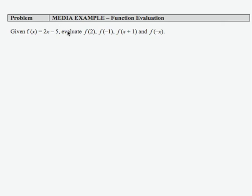Here I'm asked to evaluate a given function f(x) = 2x - 5 at an input of 2, negative 1, x + 1, and negative x.